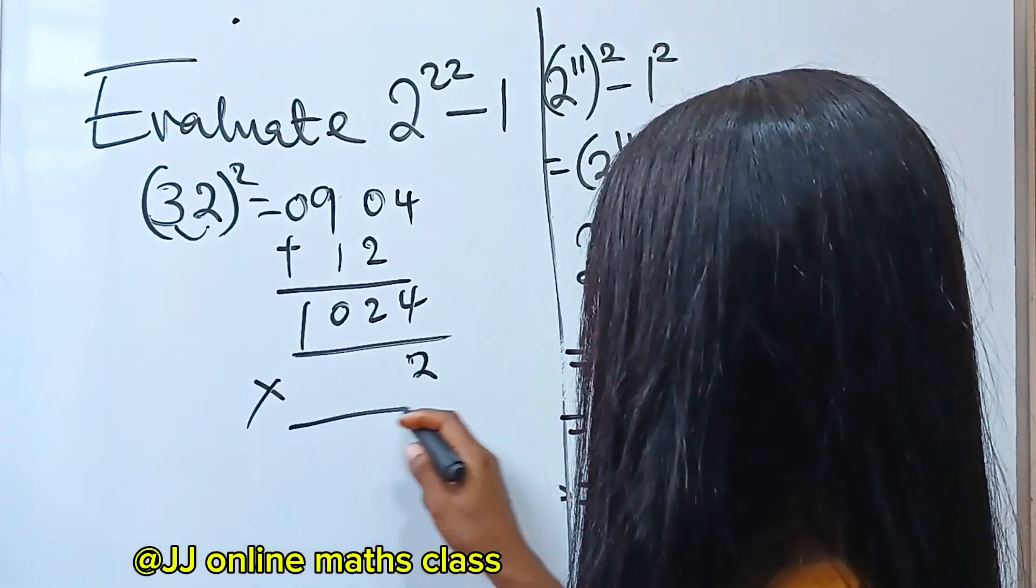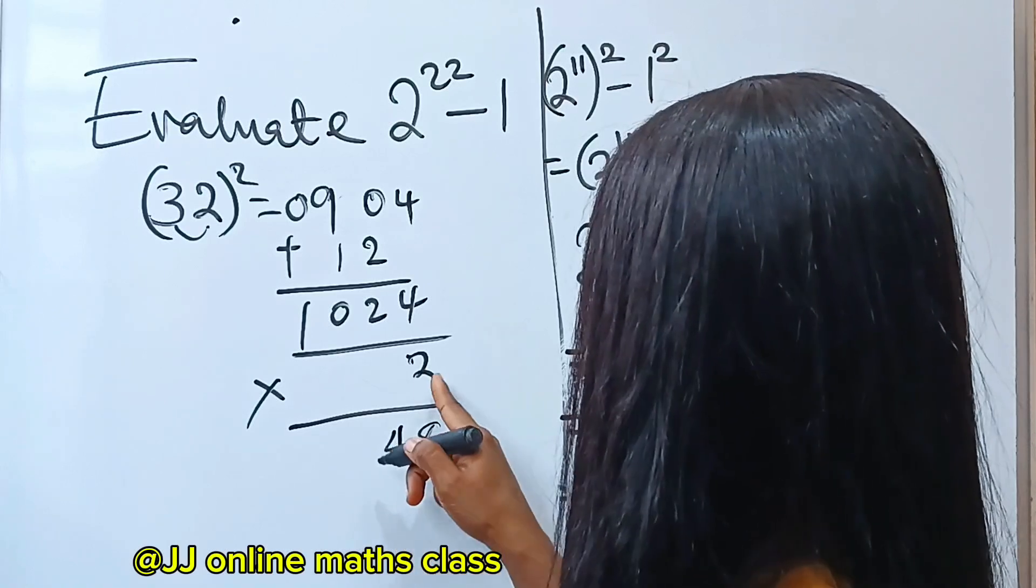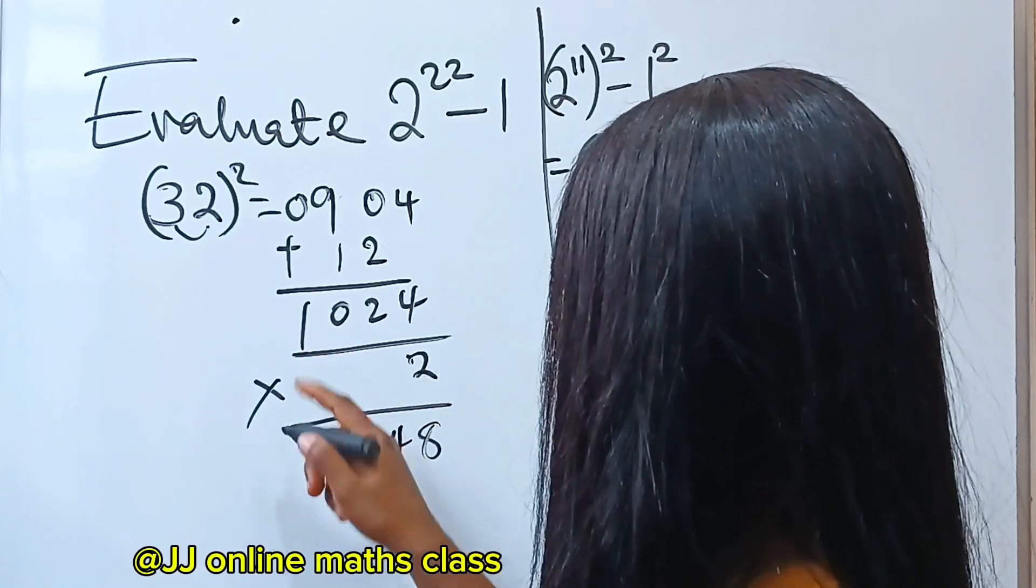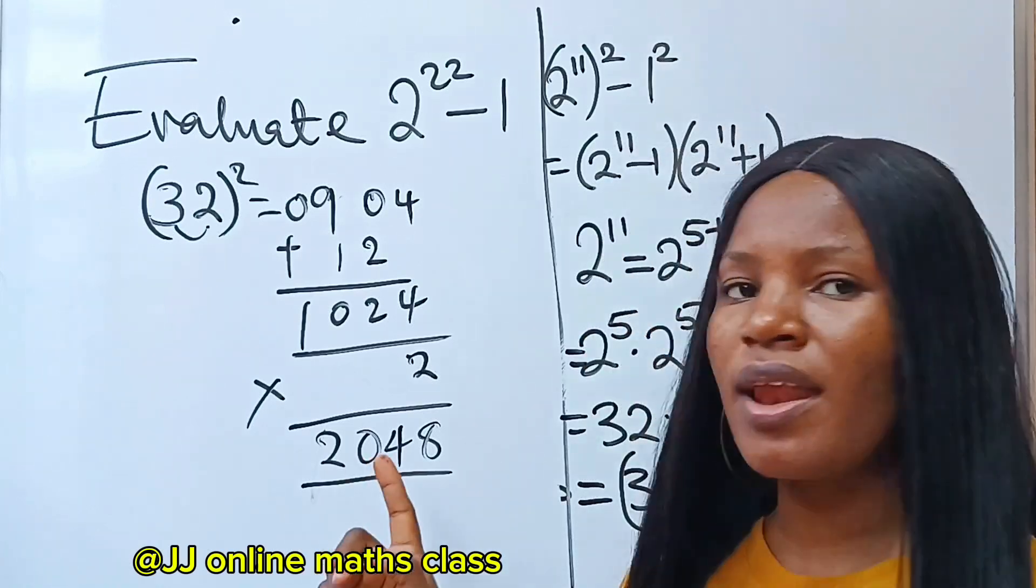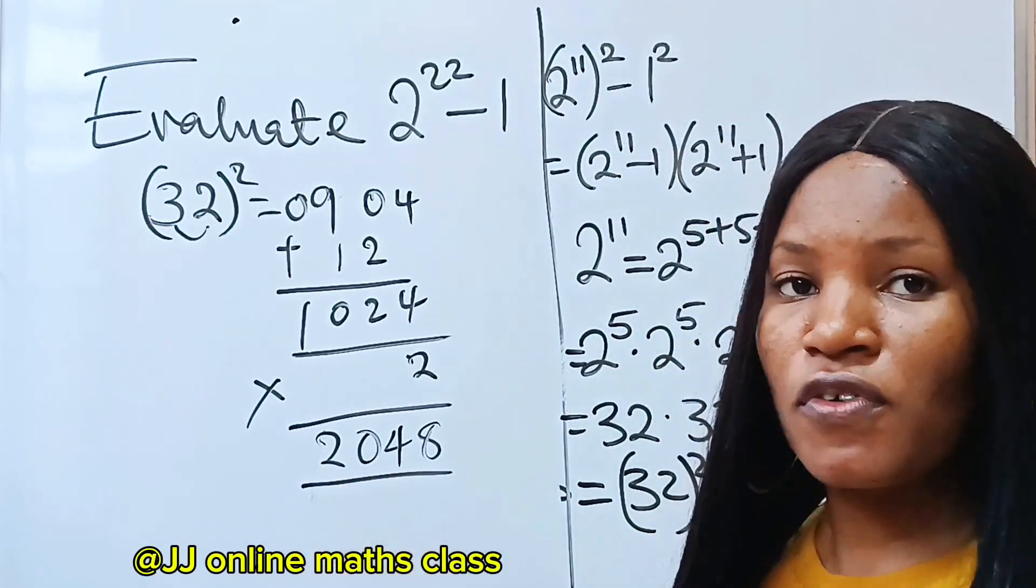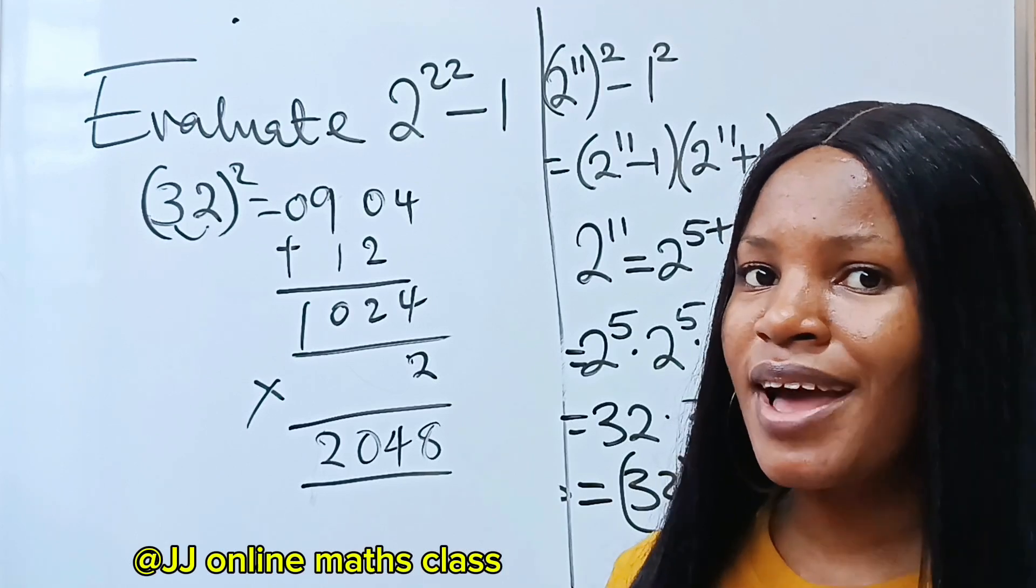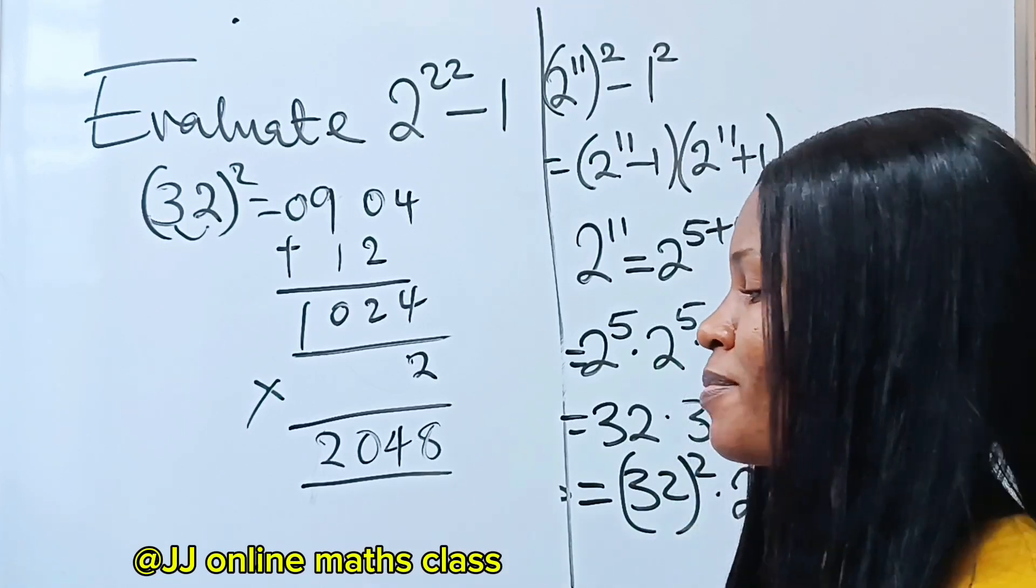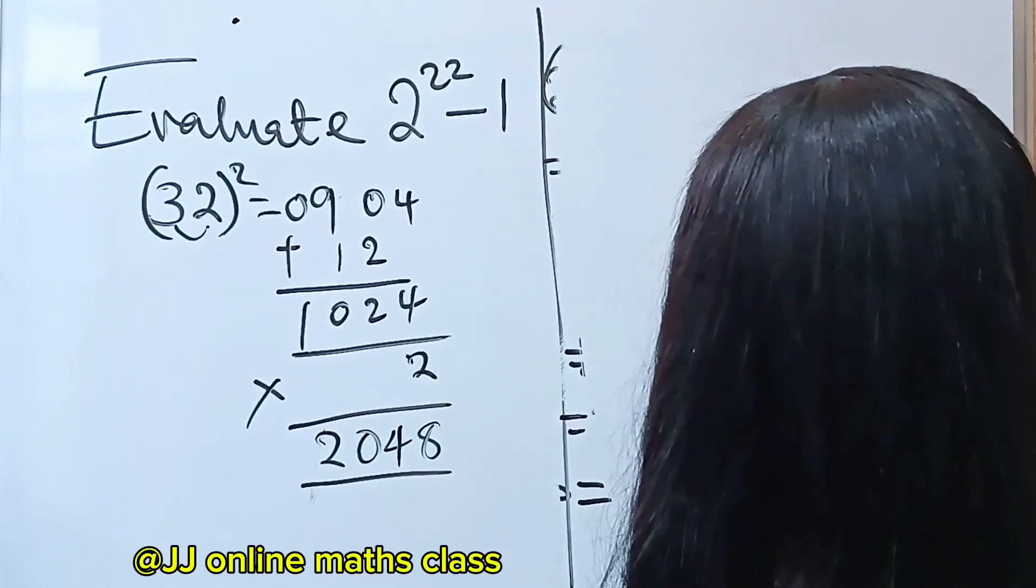So multiplied by 2. We have 2 times 4 is 8, 2 times 2 is 4, 2 times 0 is 0, and 2 times 1 is 2. So that means that 2 to the power of 11 is 2048. Yes, we are close to our solution, but not at the simplest part of it. It's still complex. So let's continue.